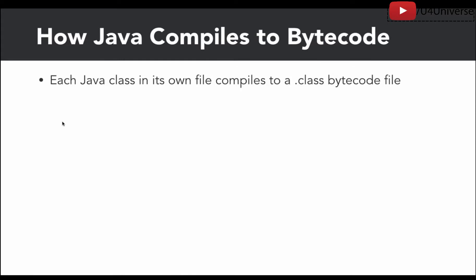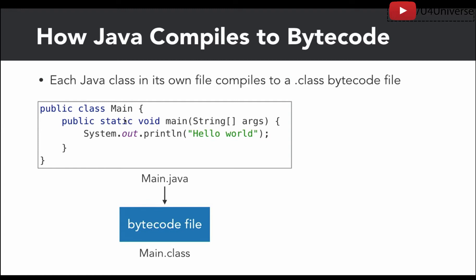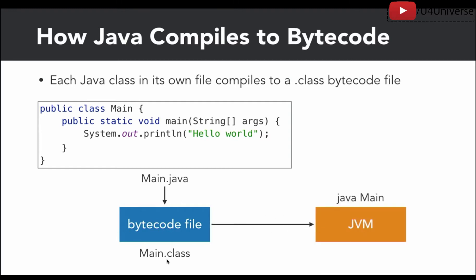If we have Java code, it will be compiled to bytecode. Each Java class in its own file compiles to a dot-class bytecode file. So each Java class produces one file. Inside this class we have a main class — main.java — which becomes main.class. That main.class is sent to JVM to run. It is also important to note that we have some dependencies and some runtime libraries in the Java runtime core libraries.